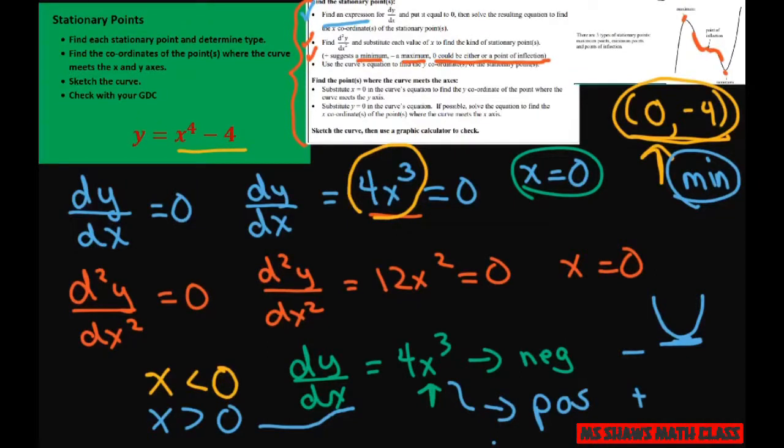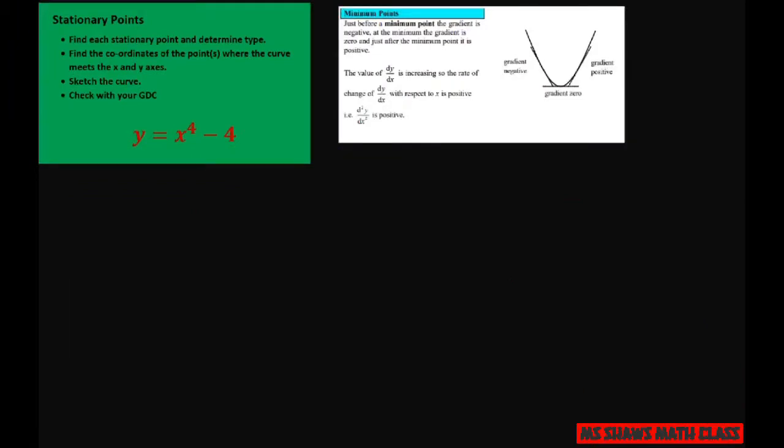All right. And now to graph it, we also need to find the coordinates. So basically we do that. And again, this is where the gradient, I did a little picture here. When the value of the derivative is increasing, so the rate of the derivative with respect to x is positive. So this is positive here, negative here. Gradient is zero. That's what we set it to. So that's why this is a minimum point.